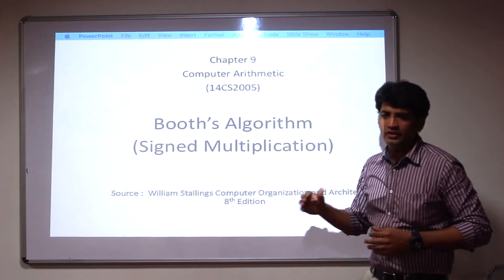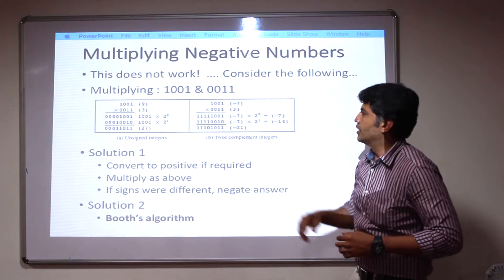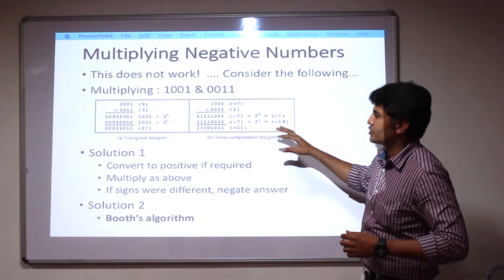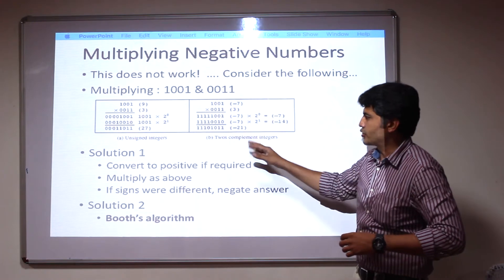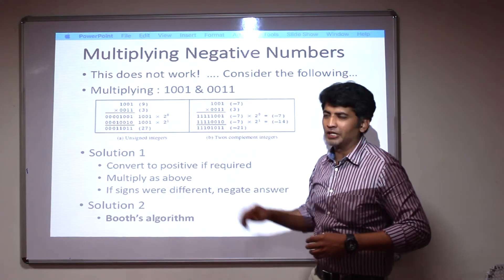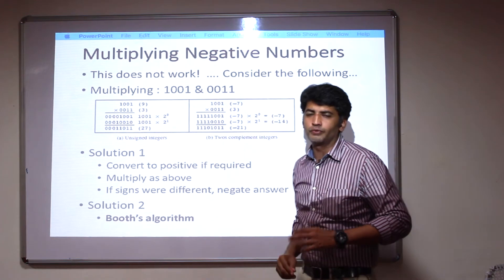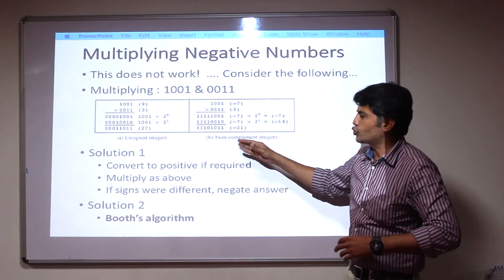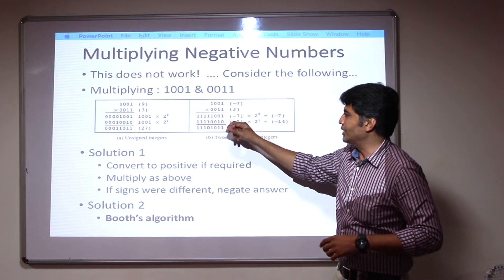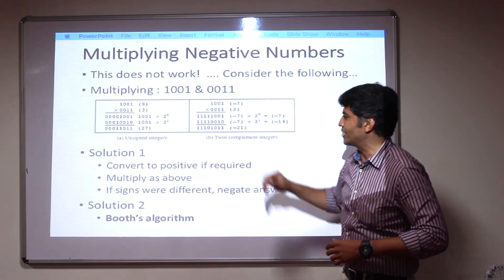Booth's algorithm always supports signed integer multiplication. We are going to take these two numbers: 1001 and 0011. Negative number multiplication is not easy — it is a little bit complex. We have two choices. If you take these two numbers as unsigned integers, the values will be different. So 1001 may be considered as 9 and 0011 as 3, giving an answer of 27. But if you consider them as 2's complement signed integers, 1001 represents minus 7, and 0011 represents 3, so 3 times 7 gives 21. This is the problem with unsigned vs signed integers.